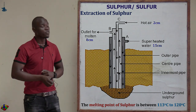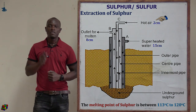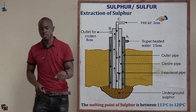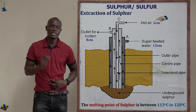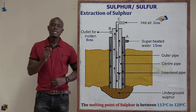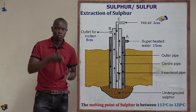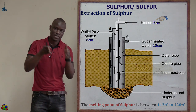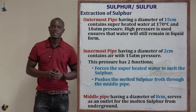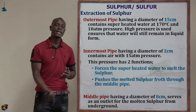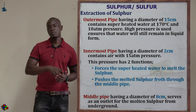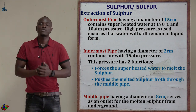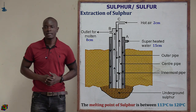For the innermost pipe, 15 atmospheres of hot air is forced down into the sulfur deposit. This produces a froth — a mixture of sulfur and water. The hot air also forces the sulfur froth from underground through the middle pipe and onto the surface for collection.